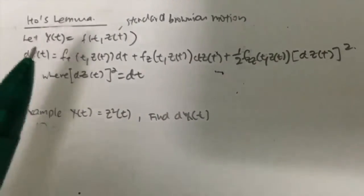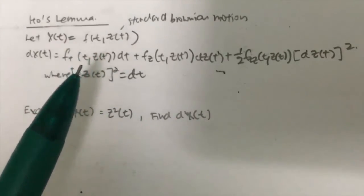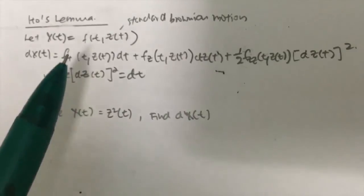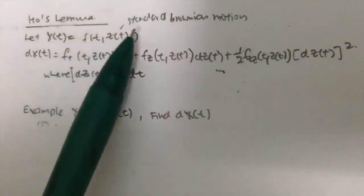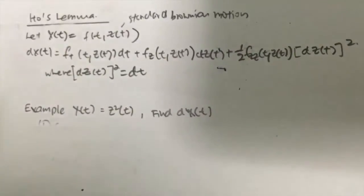It's not the usual random variables that we know when we solve our usual differential equation, but this random variable itself follows a standard Brownian motion, which is a kind of a stochastic process.